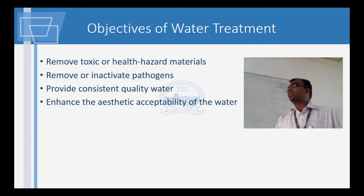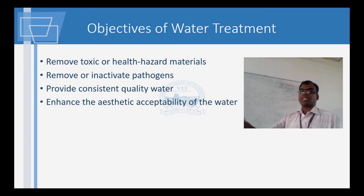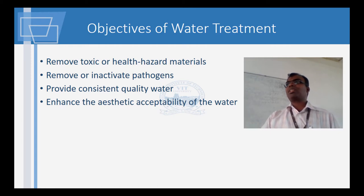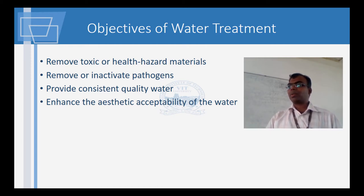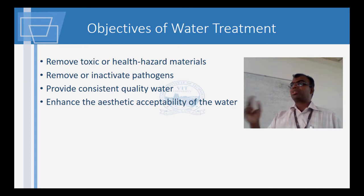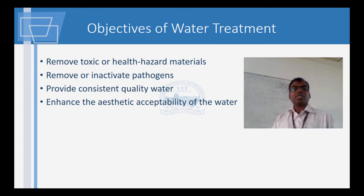The objectives of water treatment are very simple. You remove the toxic or health-hazardous material. Toxic material can be chemicals — stuff like cyanide or derivatives, which are very often found in even things like paint. It should also inactivate the pathogens. In the video we saw, there was the use of chlorine.